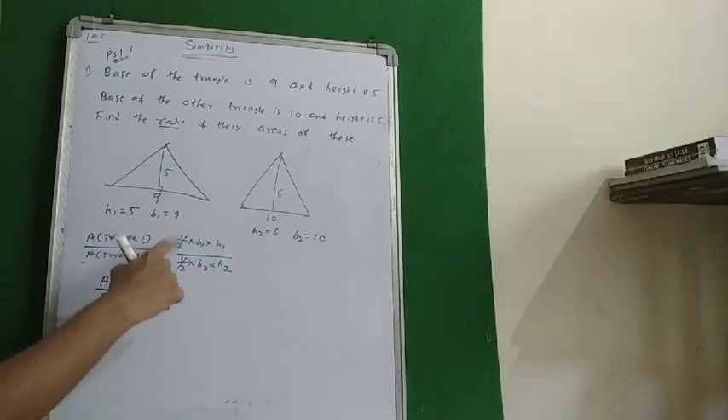So what is B1? B1 is 9. What is H1? H1 is 5. What is B2? It is 10. What is H2? It is 6. So base into height, base into height, as half-half gets cancelled. Therefore area of the first triangle upon area of the second triangle will reduce to: 5 ones up, 5 twos up, 3 threes up, 3 twos up. We have 3 upon 4.